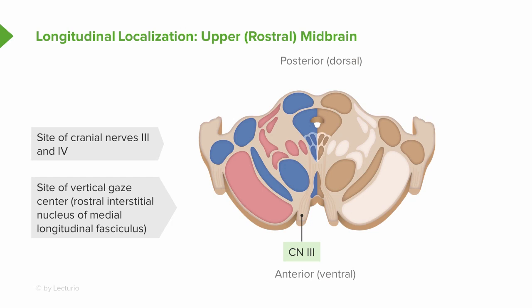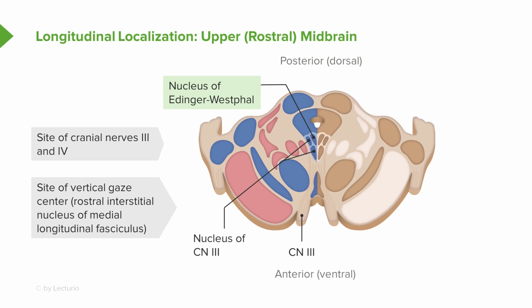We'll start with the midbrain. The critical structures to know when considering a stroke in the midbrain are cranial nerve three, four, and the vertical eye center, as well as strength on one side of the body. Here we can see cranial nerve three as it exits the midbrain. The nucleus of cranial nerve three lies just medially, and at the dorsal aspect of that nucleus is the Edinger-Westphal nucleus, which controls the parasympathetic fibers for cranial nerve three. The cerebral peduncles run on the ventral aspect of the midbrain, and these are the critical structures to remember when considering midbrain pathology.